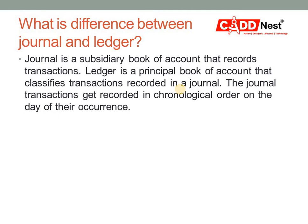Here we have the difference between journal and ledger. A journal is called a subsidiary book of accounts that records transactions. A ledger is a principal book of account that classifies transactions recorded in a journal. In the journal, we have all kinds of transactions, recorded in separate groups of accounts. Journal transactions are recorded in chronological order, date-wise, on the date of their occurrence. That balance is then taken into different groups of accounts. This is the basic difference between journal and ledger.